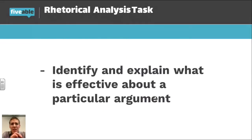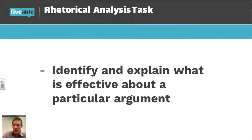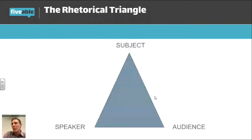In a nutshell, this is the rhetorical analysis task: identify and explain what is effective about a particular argument. But you can't do that unless you know who the intended audience is — because what's effective for someone in Russia might be different than someone in America. Likewise, what's effective for someone in 1920 might be different than what's effective in 2015. I need to think about who the precise audience is. Not just 'his audience' or 'her audience,' but who is the audience? That's who I'm grounding myself in for the analytical task.